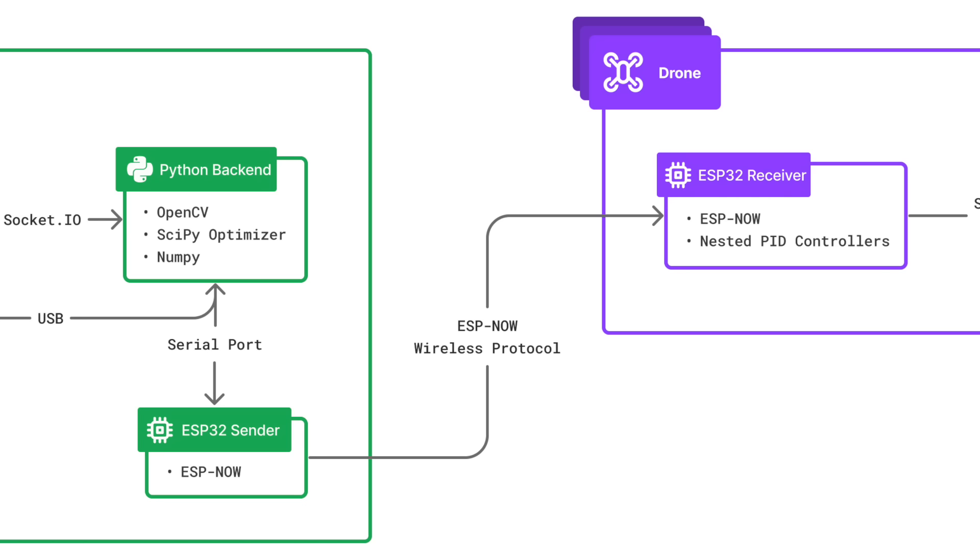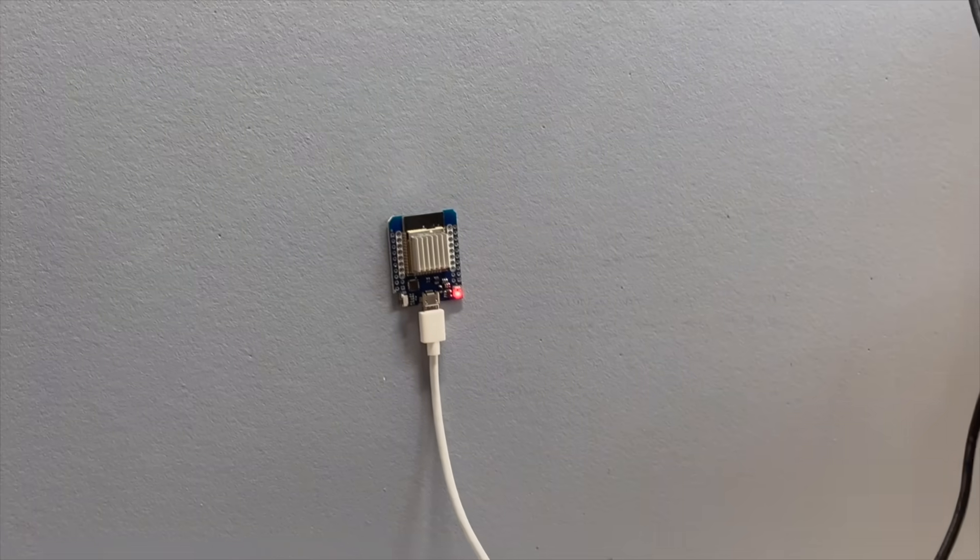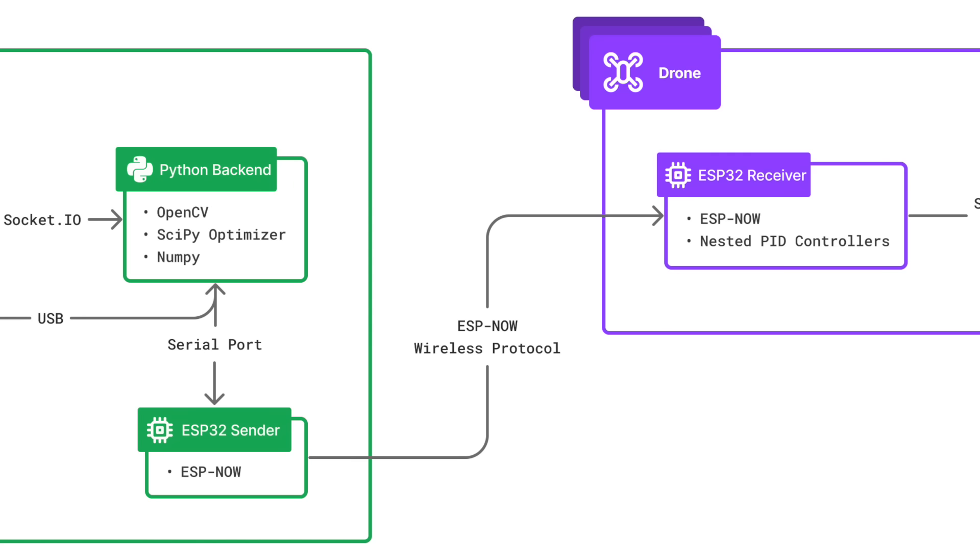These drone positions can then be sent to each respective drone wirelessly. The Python backend sends the data to an ESP32 blue tacked to my wall via serial connection. And then the ESP32 then sends the data to the drones via the ESPNOW protocol.